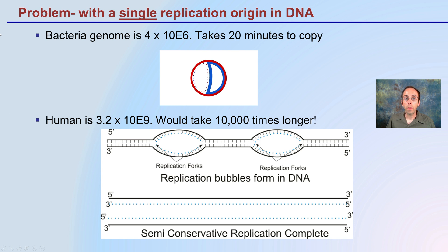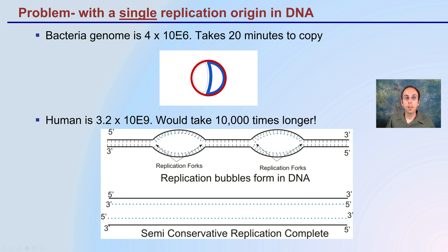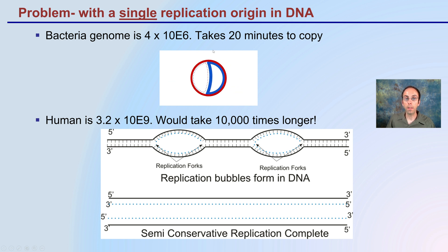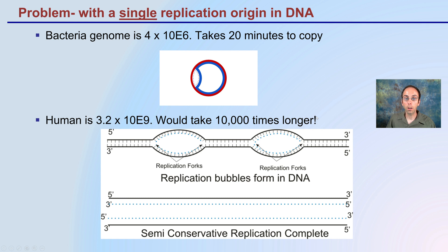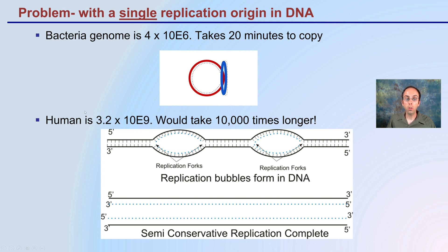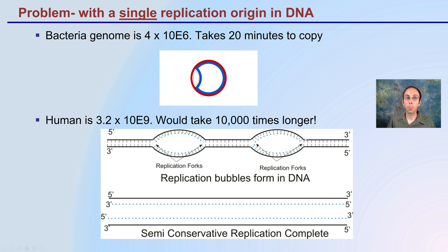A problem with having a single replication origin is that even for a bacterial genome of 4 × 10⁶ base pairs, it takes only about 20 minutes to copy. For the human genome, if there were only a single replication point, it would take 10,000 times longer, which would be biologically prohibitive. As a result, human genomes and many eukaryotes have replication bubbles — multiple replication origins along the DNA — rather than just one single site.